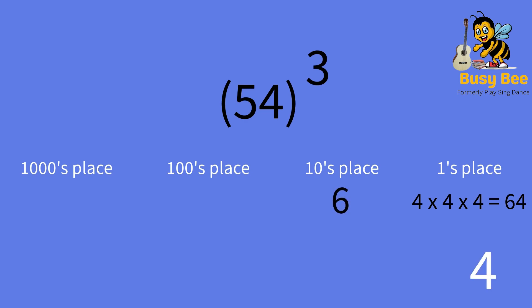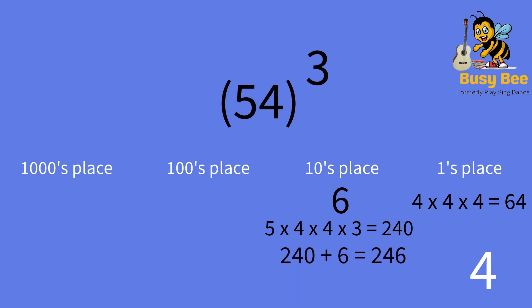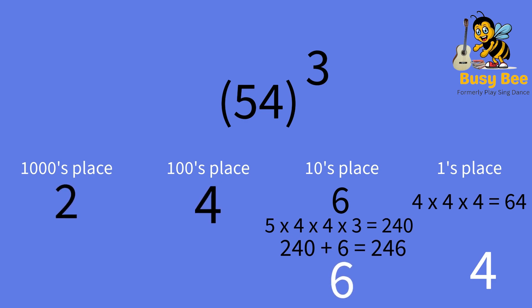The 4 is our ones place answer and we put the 6 in the tens place. Next, we multiply 5 times 4 times 4 times 3, which is 240. Now, we add 240 plus 6, which is 246. The 6 is our tens place answer and we put the 4 in the hundreds place and the 2 in the thousands place.